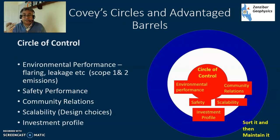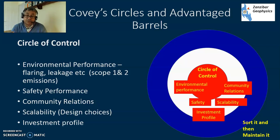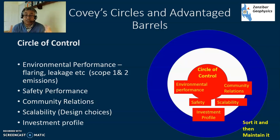Looking at the first circle - the circle of control - this is what you're basically in charge of. Environmental performance is a big focus: flaring, leakage, scope one and scope two emissions, just trying to get your environmental performance as good as you can. Your safety performance is absolutely vital - you want to make sure everyone comes home safe at the end of their shift. No excuse.